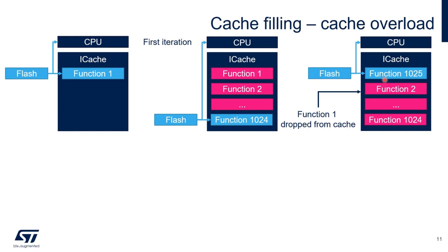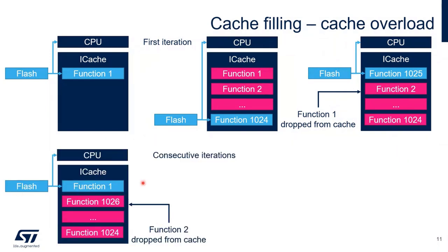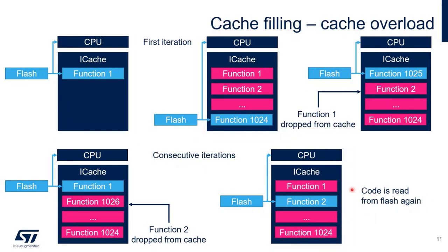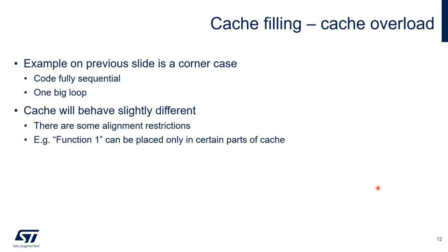Usually the core removes the function that was not used recently — in this example, function number one, though in real life it may be different due to alignment requirements. When we restart the loop, function number one is no longer in cache and must be reloaded from flash. Even if we exceed the cache size by a small amount, the performance drop can be significant. However, this is a corner case — in a real application with smaller loops, the drop will not be as large.